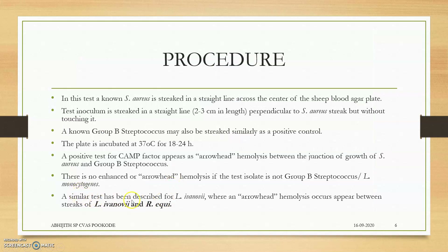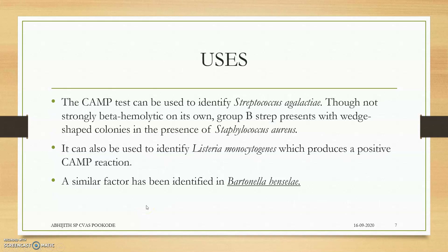A similar test has been described for Listeria ivanovii, where an arrowhead hemolysis occurs between the streaks of Listeria ivanovii and Rhodococcus equi — this example also appears in many exams. The main use of the CAMP test is to identify group B Streptococcus or Streptococcus agalactiae. It can also be used in mastitis cases if Streptococcus agalactiae is suspected as the causative agent.